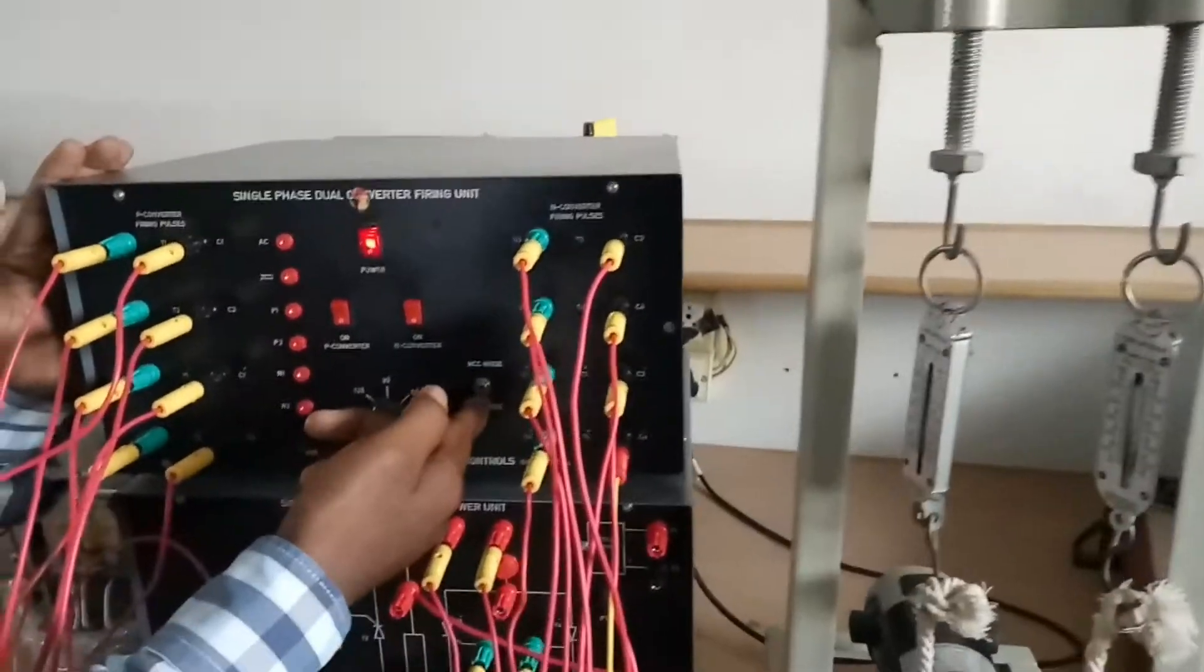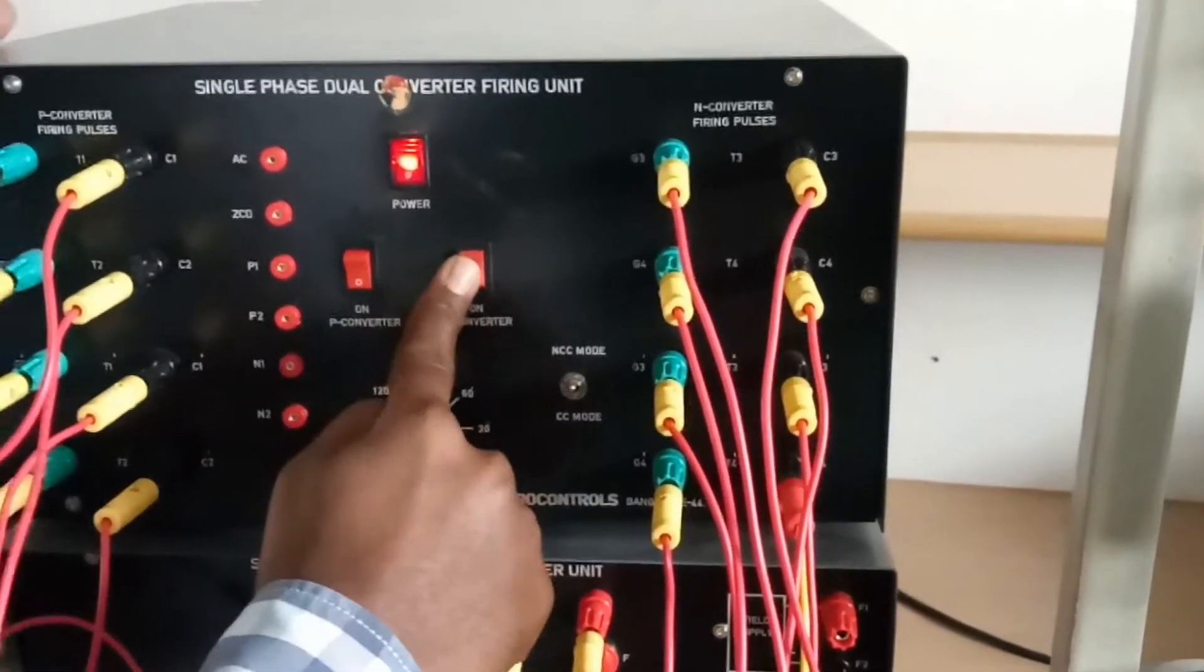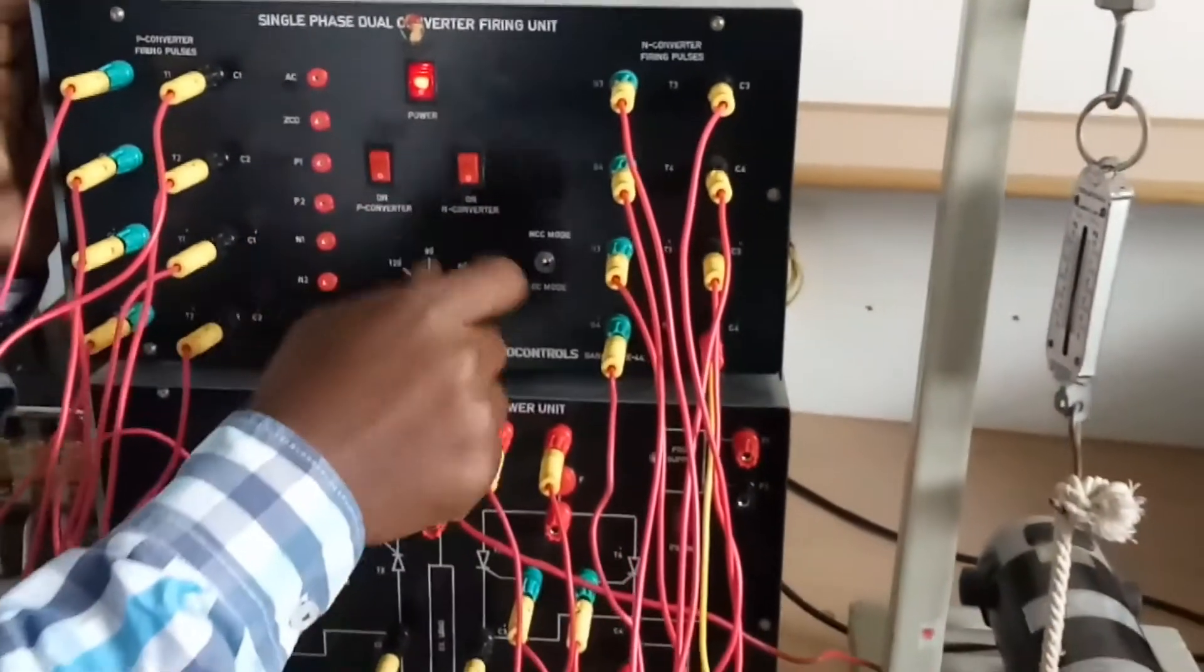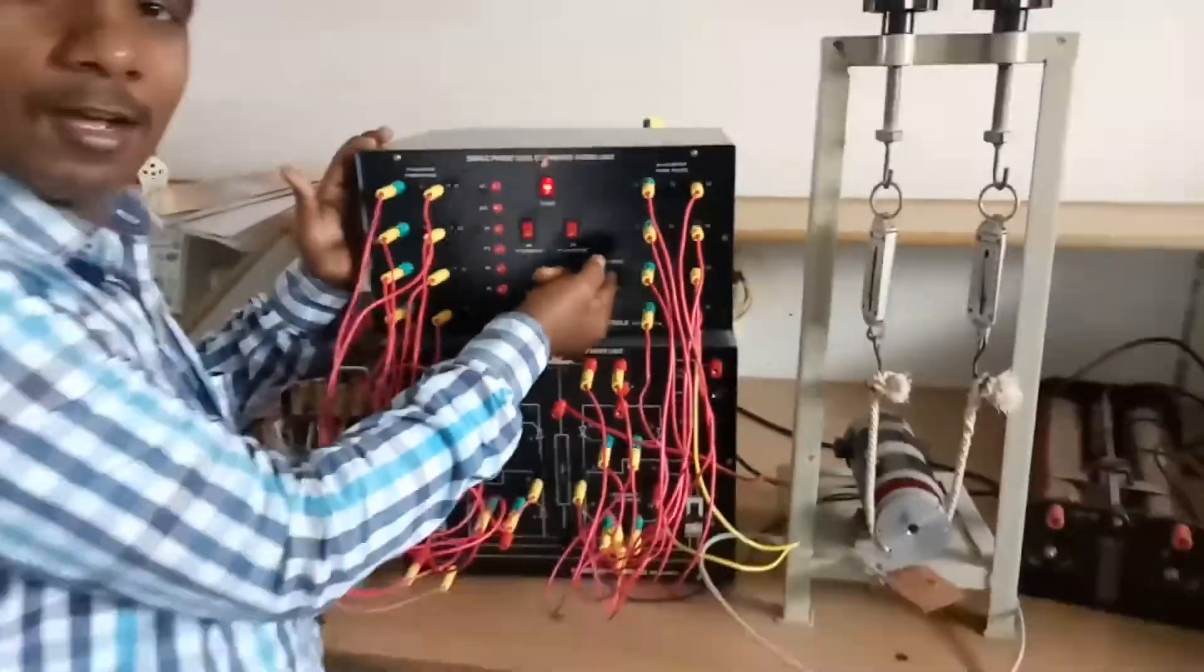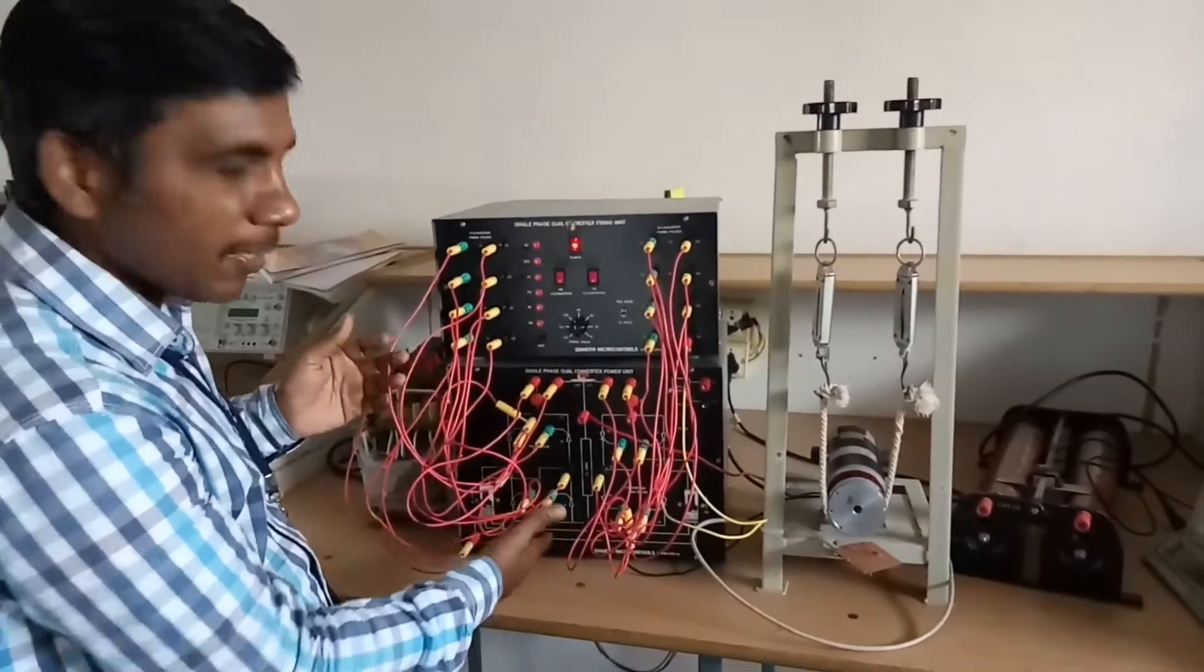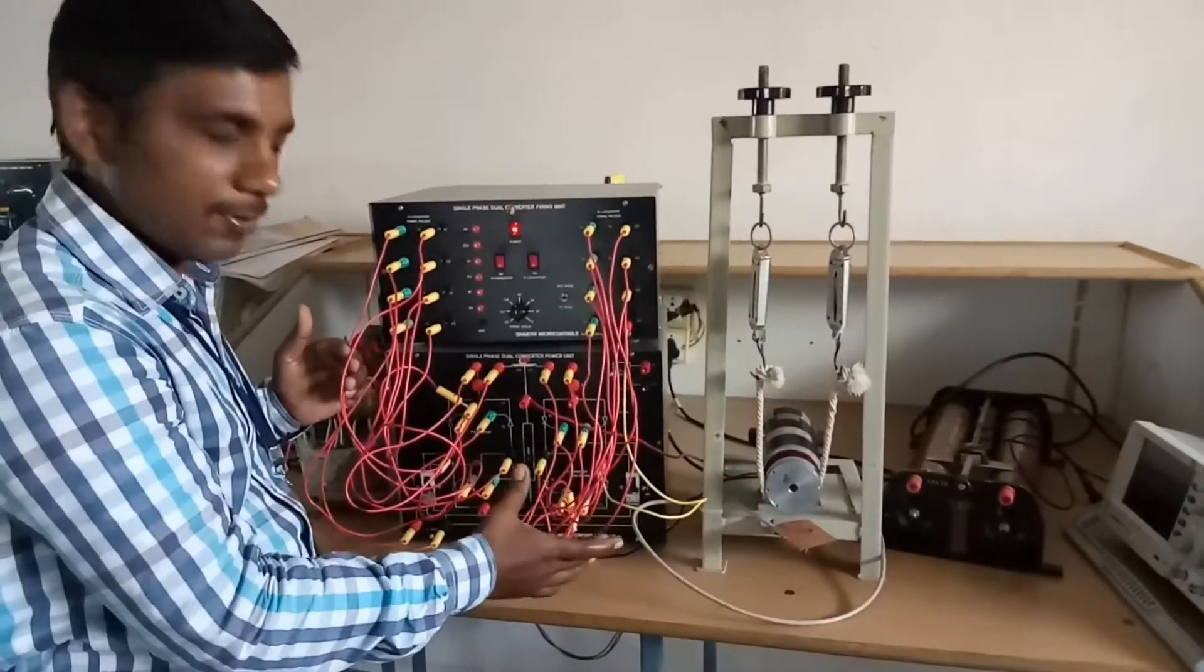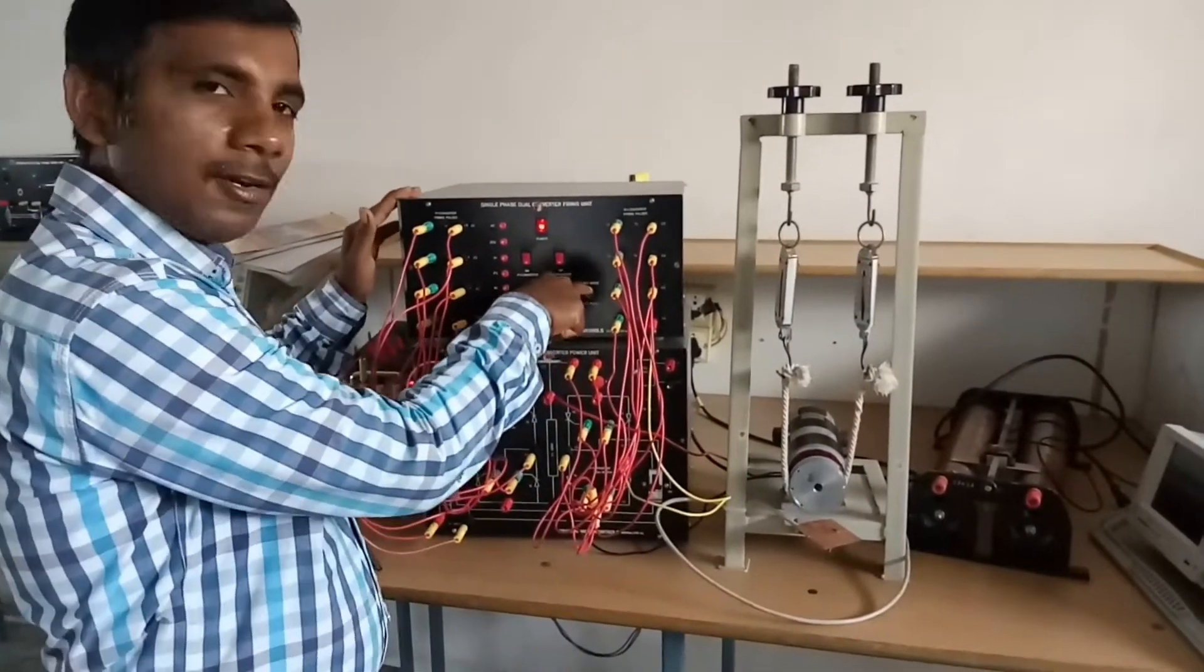Now, when it is in non-circulating current mode, any one we can turn off. In non-circulating mode, only one converter will be on. In circulating mode, both are on. The switch is used to select circulating current mode or non-circulating current mode. Now we connected all the firing pulses with respect to SCRs. Similarly, N converter all firing pulses are connected with respect to SCRs. Now we are providing it in circulating current mode.